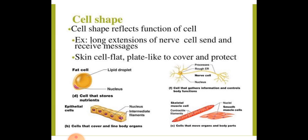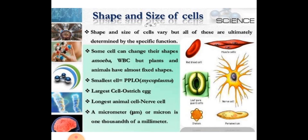Similarly, skin cells — the epithelial cells found in muscular tissue — are flat and plate-like because they have to cover the skin and perform a protective function. So in the human body also, you will see numerous types of cells that differ in both shape and size.